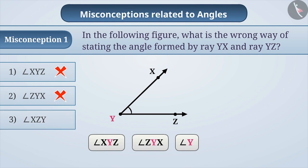If we see option 3, the middle letter is Z. According to this option, the angle is formed at point Z. But if we look at the figure, then the angle is formed at point Y. Therefore, the name angle XZY is incorrect.